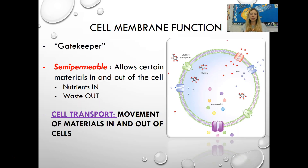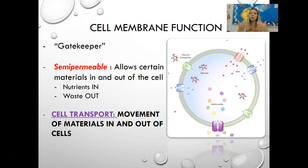The cell membrane functions as the bouncer or gatekeeper of the cell — it controls what goes in and out. It only allows things that are supposed to come in, in, and things supposed to go out, out. Generally speaking, it lets nutrients in and waste out. Because it only allows certain materials in and out, we call it a semi-permeable barrier — semi meaning somewhat, permeable meaning able to pass through. The term used to describe the movement of materials in and out of the cell is called cell transport.